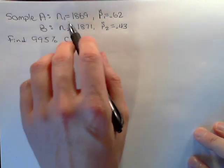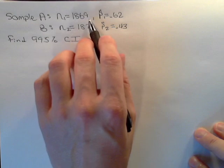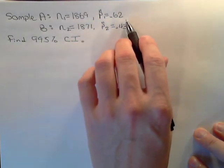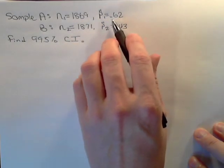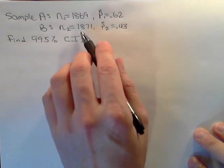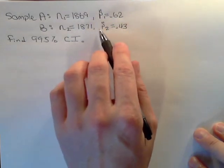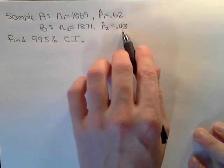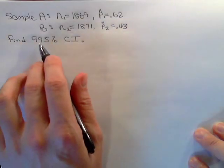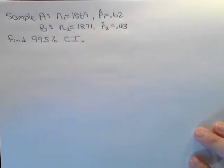All right, here we have sample A with 1,868 individuals with a sample proportion of success of 0.62, and a second sample of 1,871 individuals with a success sample proportion of 0.43. Find a 99.5% confidence interval.